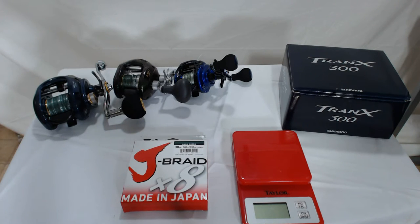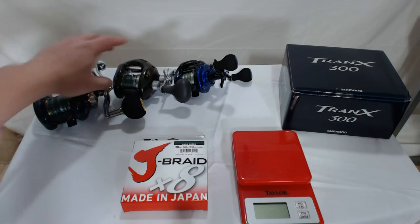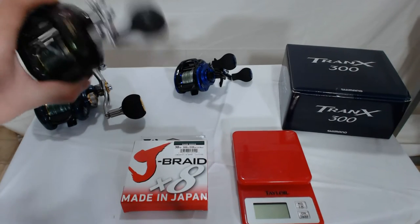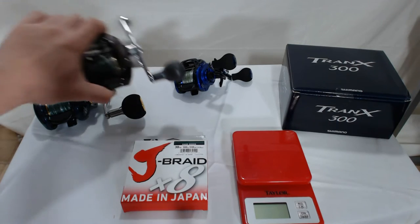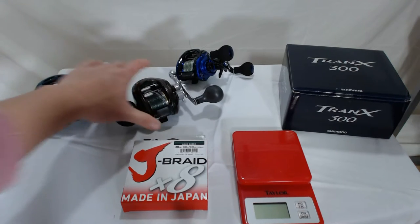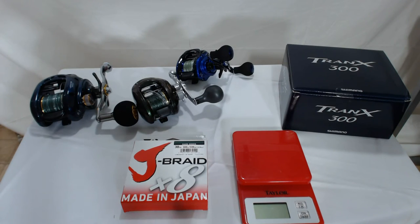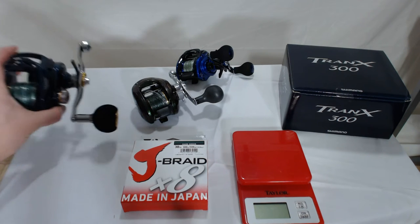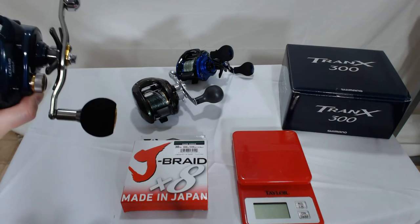I laid out some reels in comparison because I bought the Tranx 300 to use for lighter inshore fishing, maybe piers and bridges. The 200 was a little too small. The 300 Curato is a little heavier side and I don't feel comfortable using it in saltwater. The 400 is way too big for any kind of light inshore fishing.